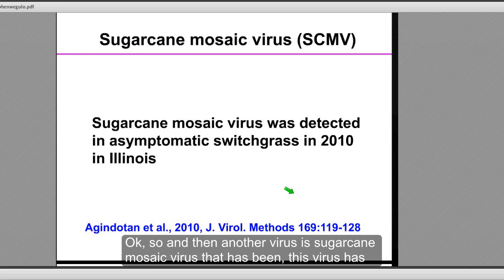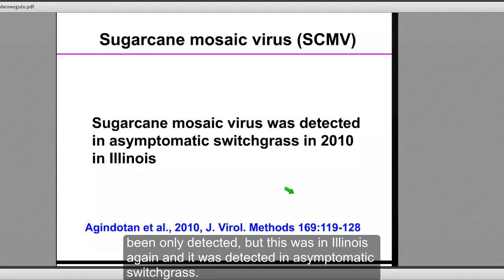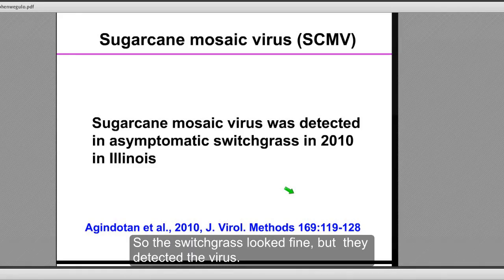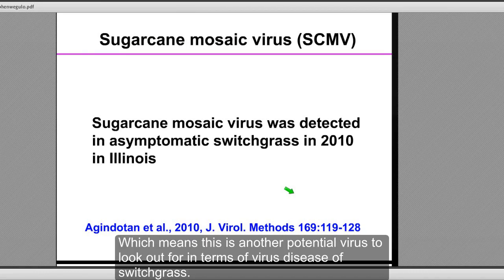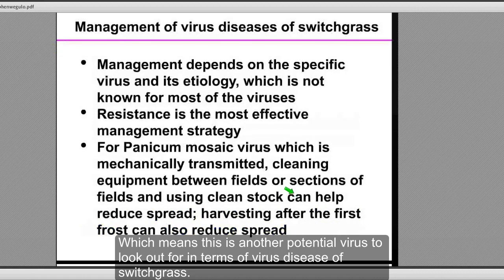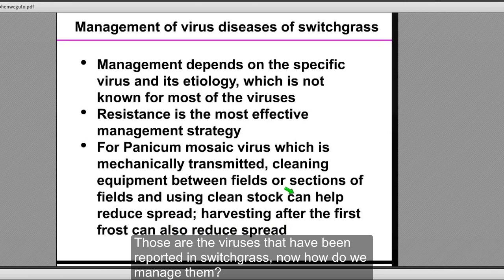Another virus is sugarcane mosaic virus, detected in asymptomatic switchgrass in Illinois — the switchgrass looked fine but the virus was detected in it. This makes it another potential virus to watch for in switchgrass production. Those are all the viruses that have been reported on switchgrass.